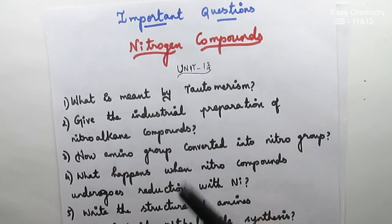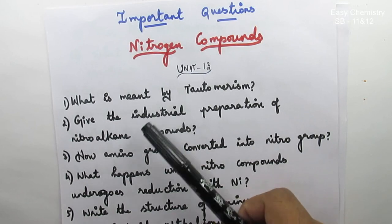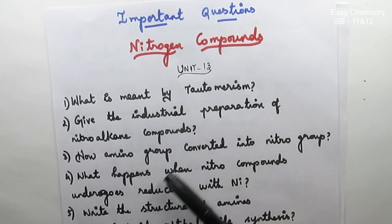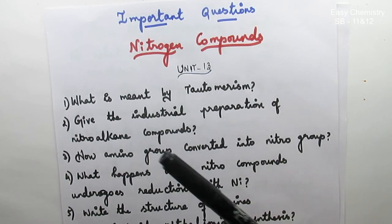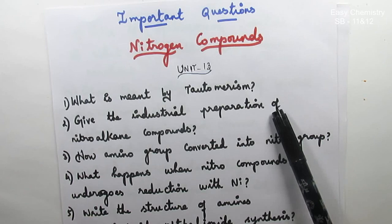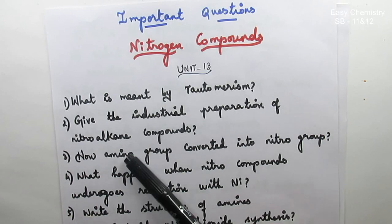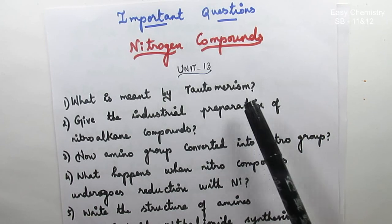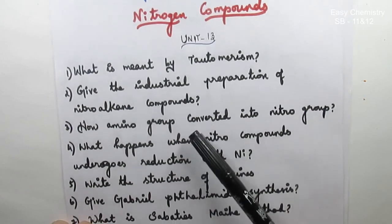First question: What is Tautomerism? Second: Industrial Preparation of Nitro-Alkane Compounds — preparation of Nitro Compounds.